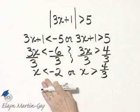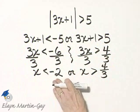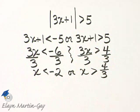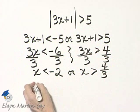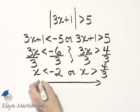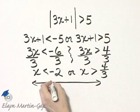These are solutions. Any number less than negative 2 is a solution or any number greater than 4 thirds is a solution. I'm going to write this in interval notation. So let's look once again at the graph because I think it helps.